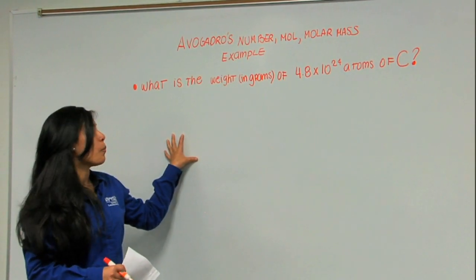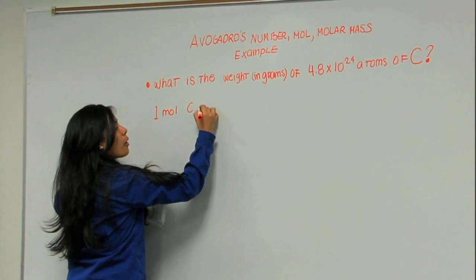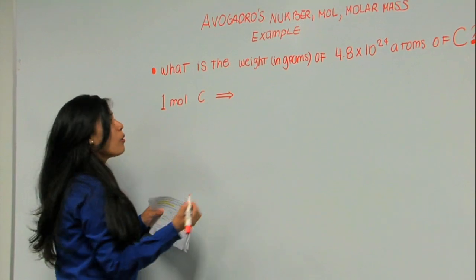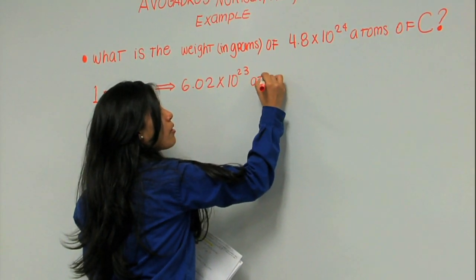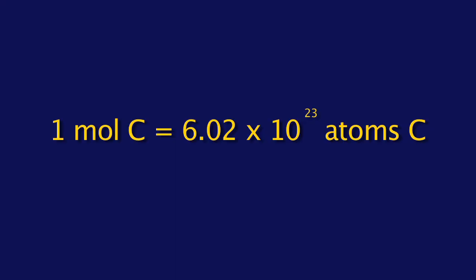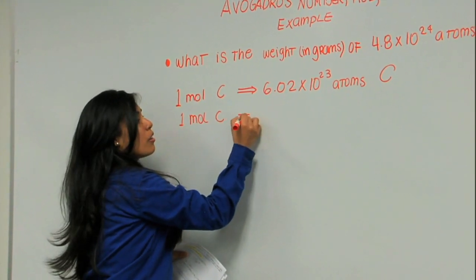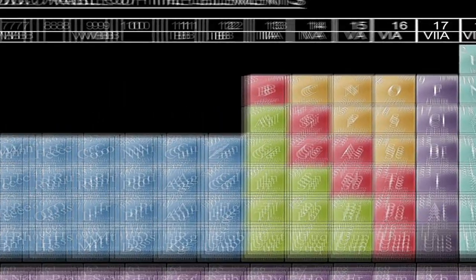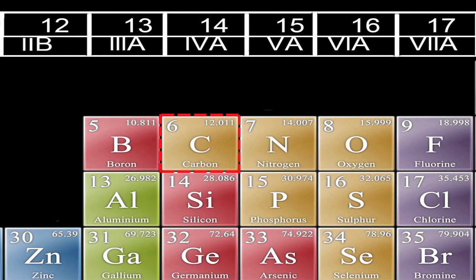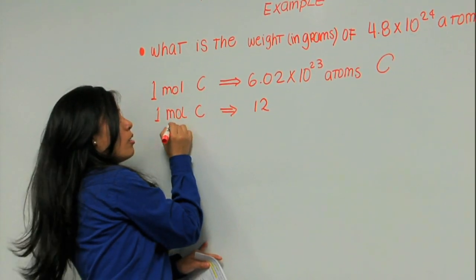So let's start by writing down what we know. We know that 1 mole of carbon is equal to having 6.02 times 10 to the 23 atoms of carbon. We also know that 1 mole of carbon weighs — we go to the periodic table and look at the mass, which is 12.011. For practical purposes, we're just going to say 12. So 1 mole of carbon weighs 12 grams.